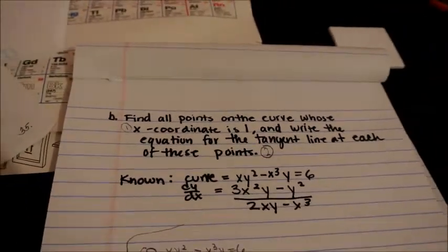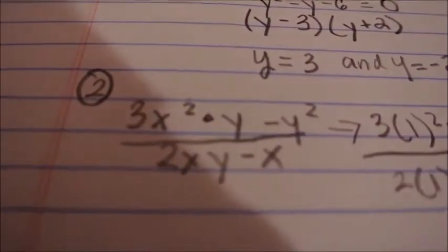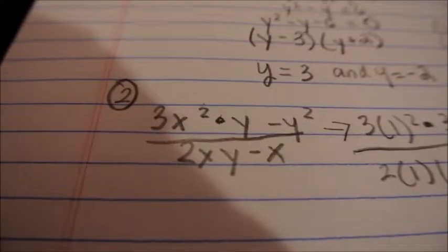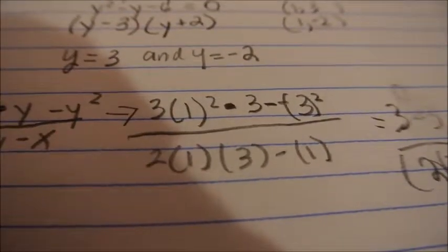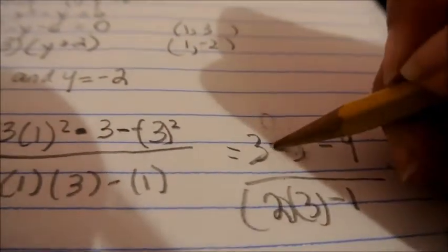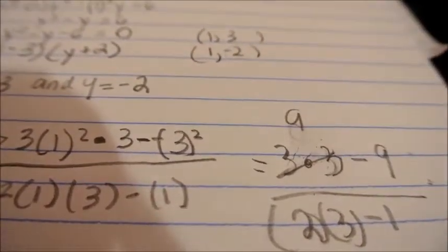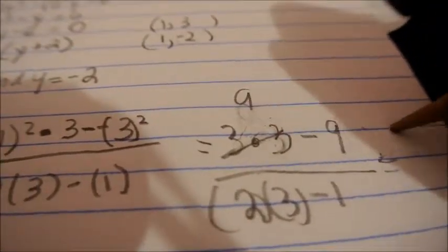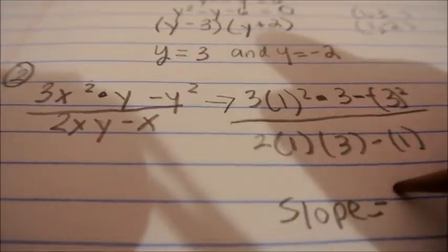Now, we need to write the equation for the tangent line. I'm just taking the derivative again. 3x squared times y minus y squared all divided by 2xy minus x cubed, and then I plug in the x and y from one of the points and I solve it. So that's 9 minus 9, which is 0 divided by 5. 2 times 3 is 6, minus 1 is 5, which means the slope equals 0.